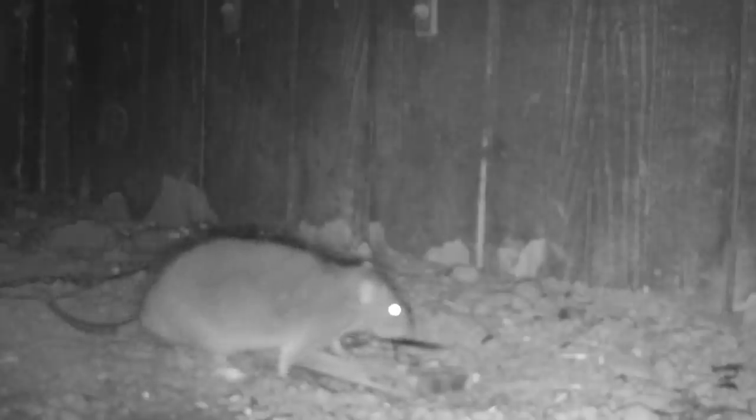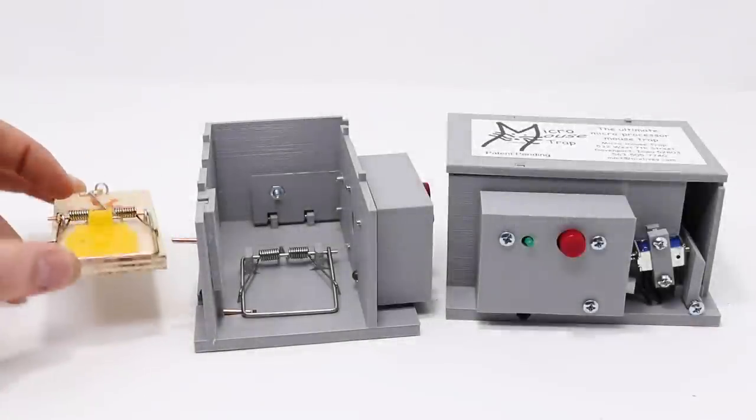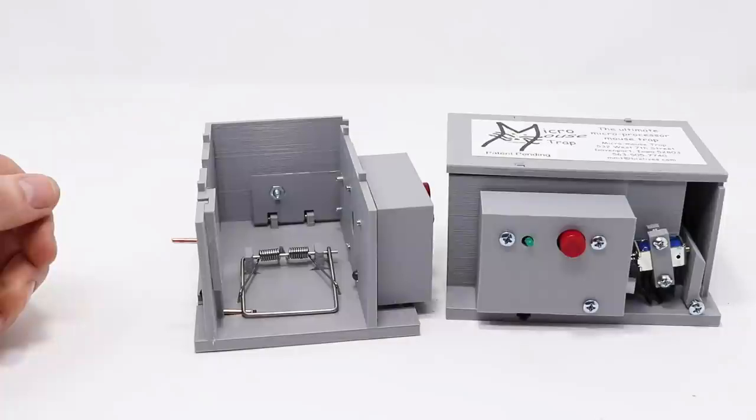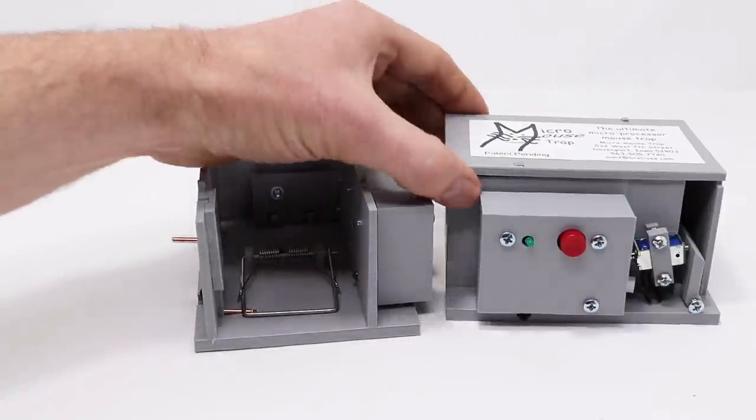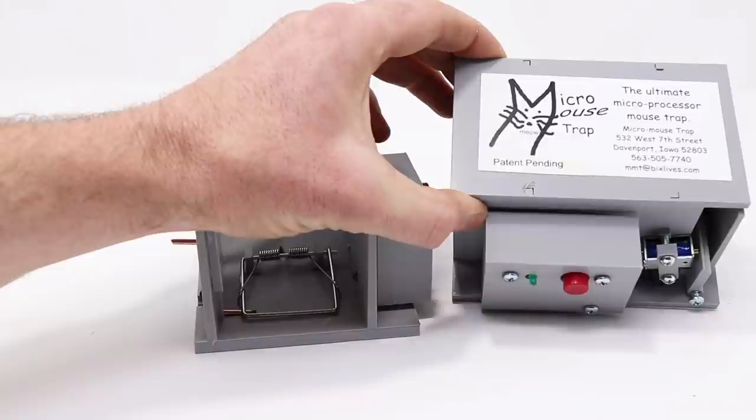Mice and rats are so cautious around traps, they'll gently lick off the bait but not trigger it. If that's happened to you, don't use the standard snap traps. Try the new mousetrap design called the Microtrap, the ultimate microprocessor mousetrap.